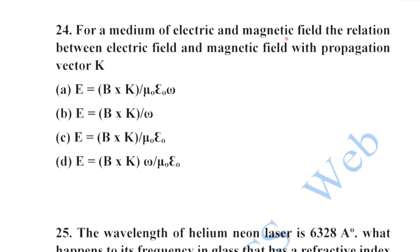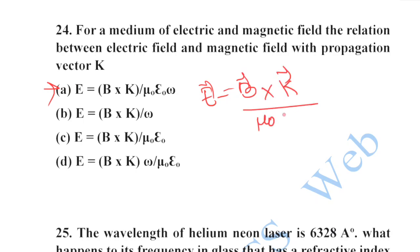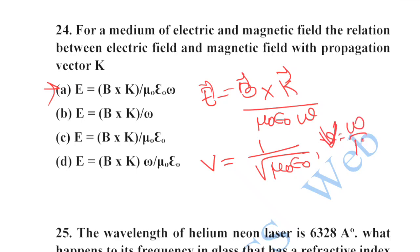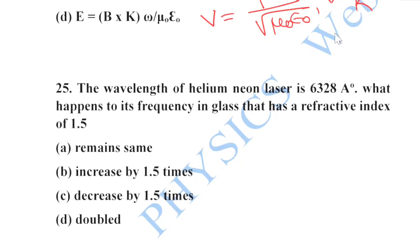Next: expressing E in terms of B and k, the relation is E = (B cross k vector) / (μ₀ε₀ω). Option A is your correct option. You can verify that the E/B ratio gives v here too, since v = √(1/μ₀ε₀) and v = ω/k.